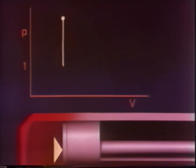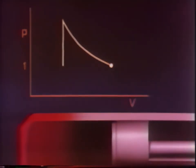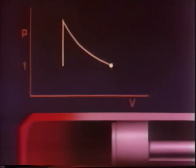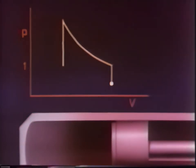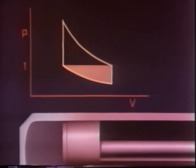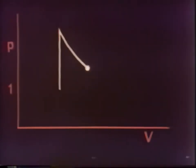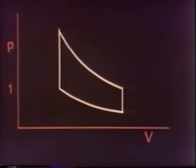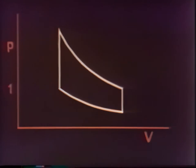Let us relate this cycle to a PV diagram. We start with a given volume and a pressure of one atmosphere. When heat is supplied to the cylinder, the pressure rises. This distance is proportional to the force acting on the piston. When the gas expands, its pressure drops and the force becomes smaller. This area is proportional to the energy delivered by the gas. During cooling, the pressure of the gas in the head becomes lower than one atmosphere, and the piston driven to the left delivers yet more energy. The work done in one cycle is proportional to the area enclosed by the related curves.